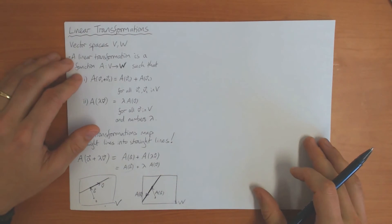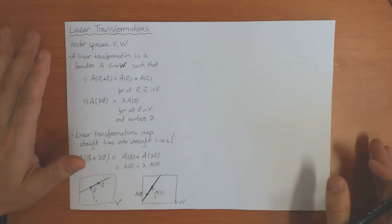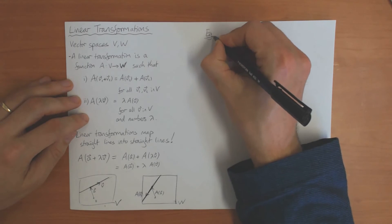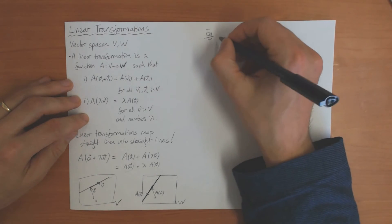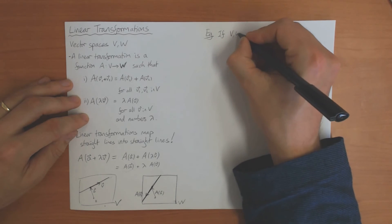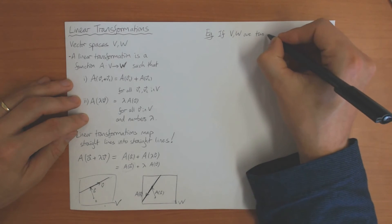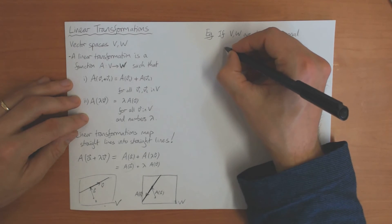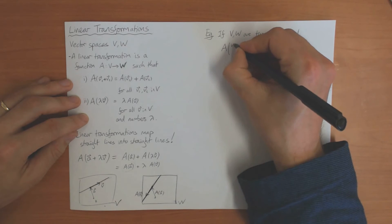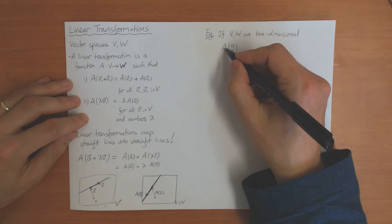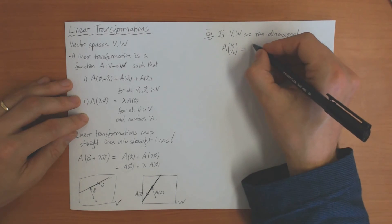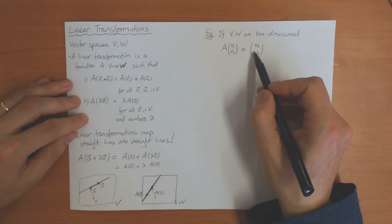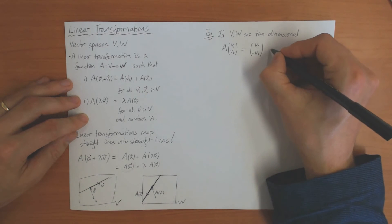We want to be able to write down a linear transformation quantitatively — for example, how can I describe a rotation quantitatively? If V and W are both two-dimensional, I can give a numerical example by specifying what happens to a vector with components (V1, V2). For example, A applied to (V1, V2) gives (V2, -V1) — it swaps the components and multiplies one by minus one. It is easy to check that this is a linear transformation.